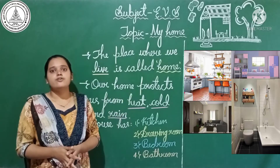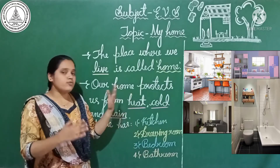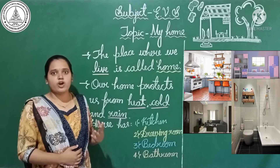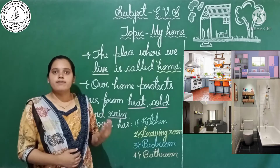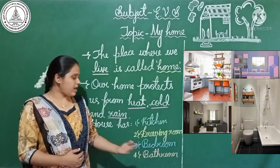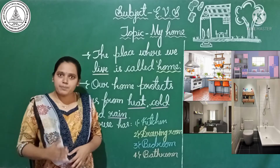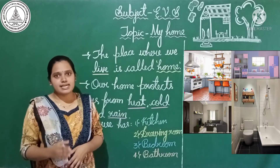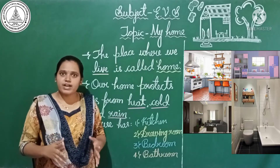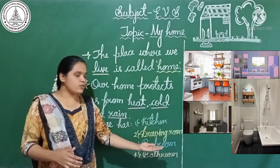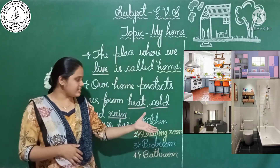Dear children, now we understand that for every activity we need a separate room in the house. For cooking, we need a kitchen. To get entertainment or sit together with family, we need a drawing room. We also need the drawing room to welcome our guests. To sleep, we need a bedroom. To get a bath, we need a bathroom. For every activity, we have a separate, different room in the home. Home is the place where we live and it has different rooms: kitchen, drawing room, bedroom, and bathroom.